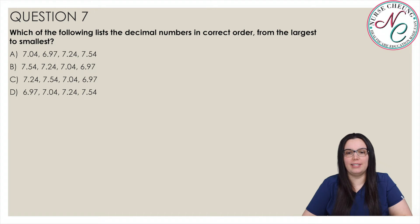Which of the following list of decimal numbers is in the correct order from largest to smallest? Is it choice A, B, C, or D? And the correct answer is B.